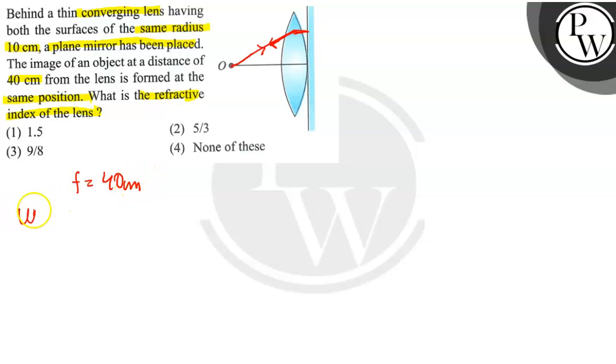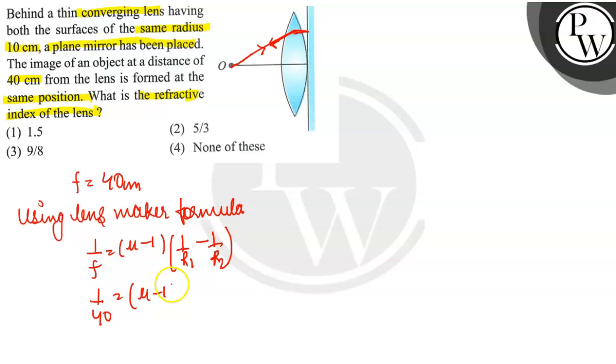Right, now we will use the lens maker formula. We will find the refractive index. What is 1/f equals mu minus 1, 1/r1 minus 1/r2. So this is 1/40 equals mu minus 1.